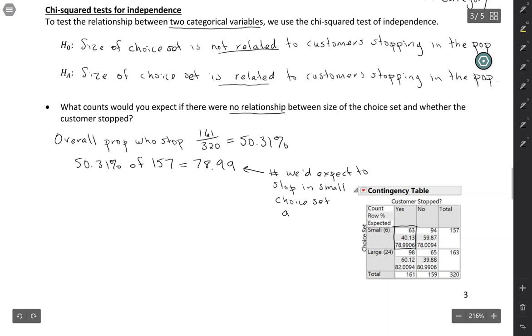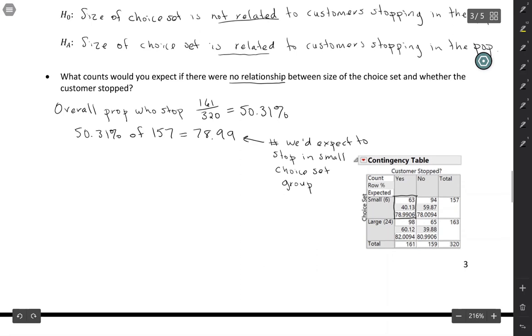So again, whenever we say expected, we mean what we would expect if the null were true. Here, what we would expect if there were really no relationship. So you can sort of reason it out that way, but there's also a formula for the expected counts.